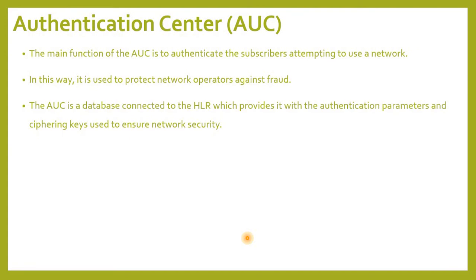The main function of the AUC is to authenticate the subscribers attempting to use a network. In this way, it is used to protect network operators against fraud. The AUC is a database connected to the HLR, which provides it with the authentication parameters and ciphering keys used to ensure network security.